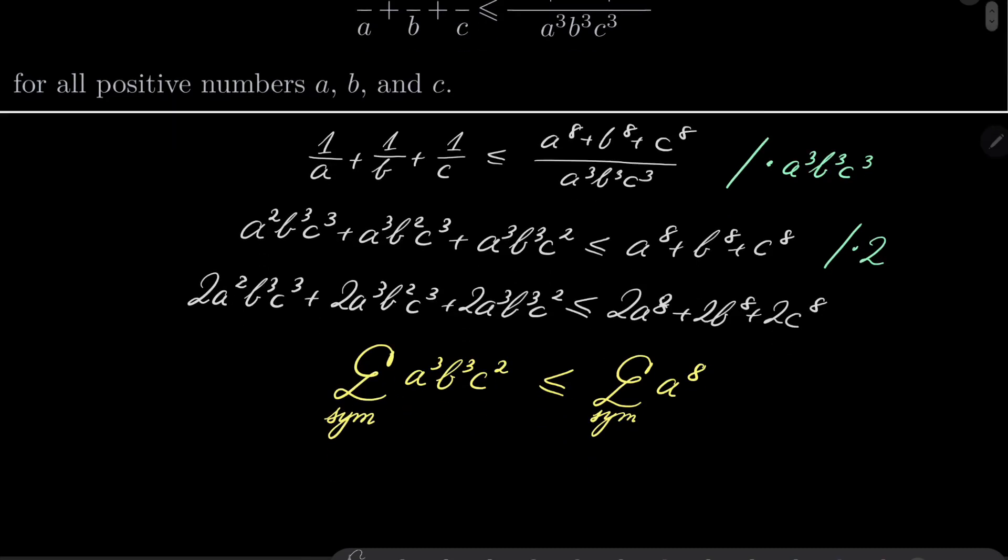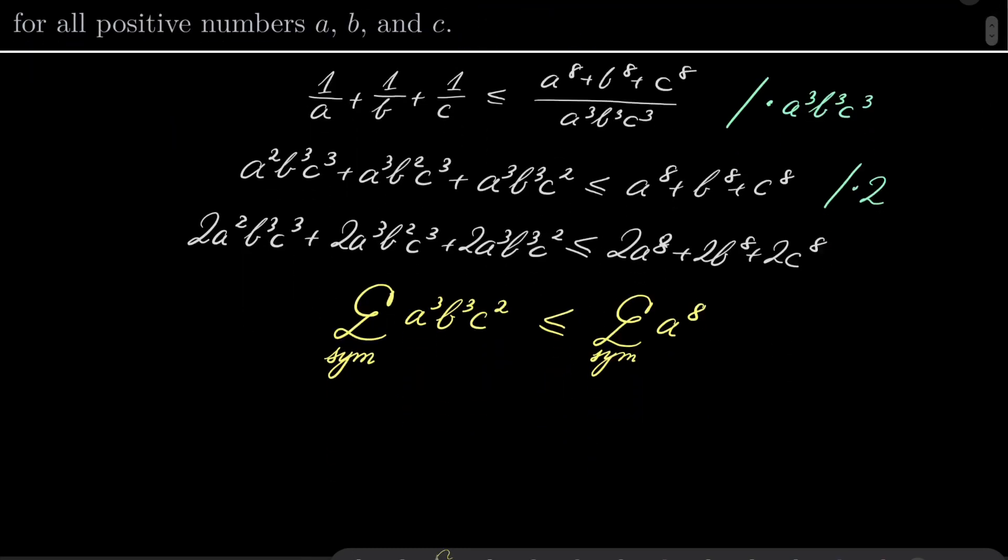Now, time to use Muirhead's inequality. To use it we need to compare these exponents right here. Or maybe I will write it in a more suggestive way because here we have b⁰, c⁰. And let's compare these two sequences.